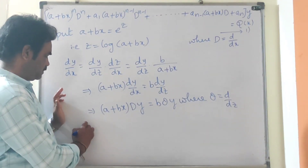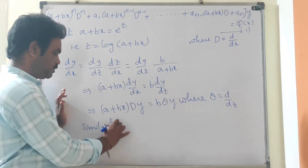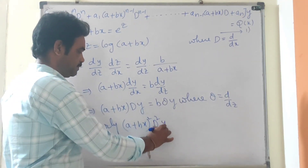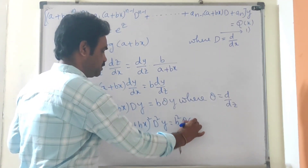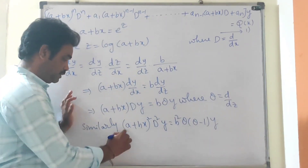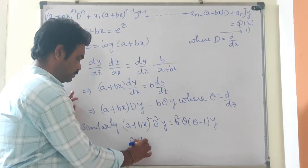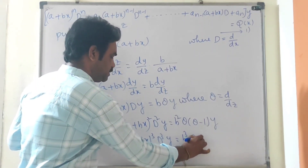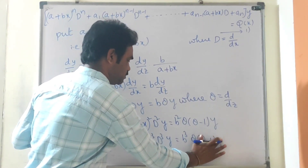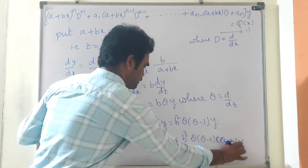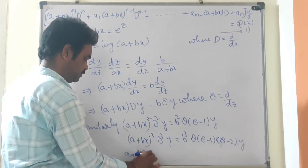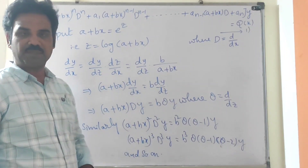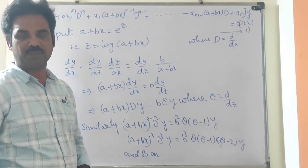Similarly, considering d²y/dx², we can prove that (a + bx)² · D² = b² · θ(θ - 1) · y, and (a + bx)³ · D³ = b³ · θ(θ - 1)(θ - 2) · y, and so on. Now substituting all these values in equation 1, we get a linear differential equation with constant coefficients, and we already know how to solve that equation.